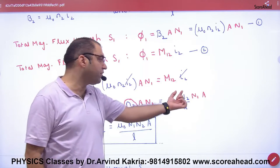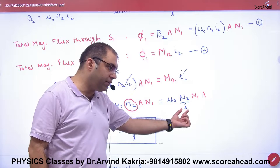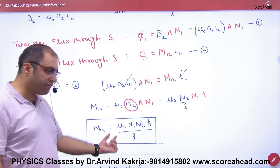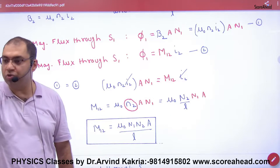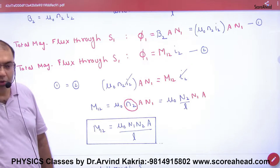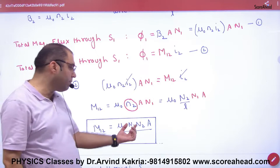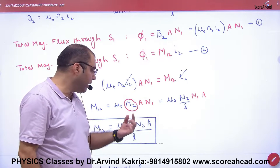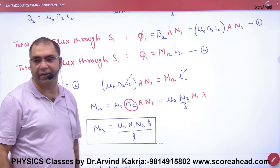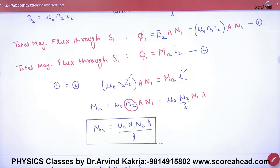N2 means number of turns per unit length. Mark this formula — it will be useful in numericals. Mutual inductance of both coils depends on both coils' number of turns, depends on area, and depends on length. Now you might ask: how do we know which is primary and which is secondary?